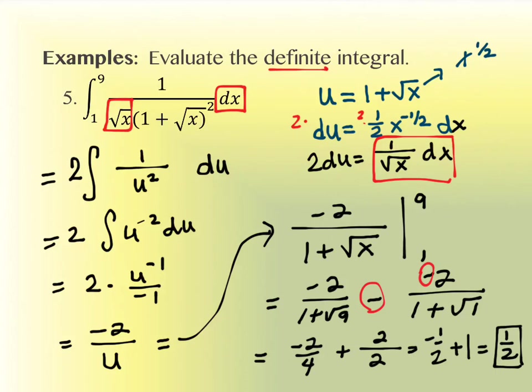Student question: Could you have just expanded that square and distributed on the original problem? On this one you could have, but then you wouldn't be able to find the antiderivative because you would have addition and subtraction in a denominator, and we don't have any properties that tell us how to deal with addition and subtraction in a denominator. Substitution is the only option for this.